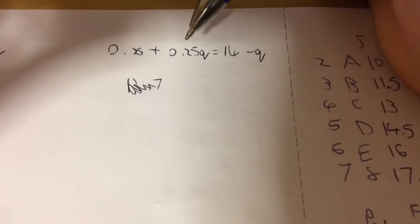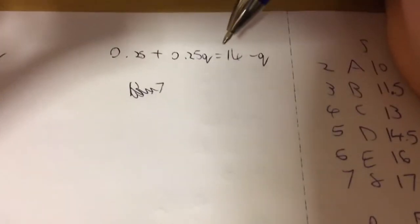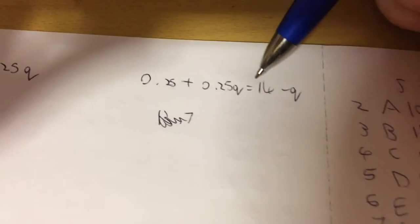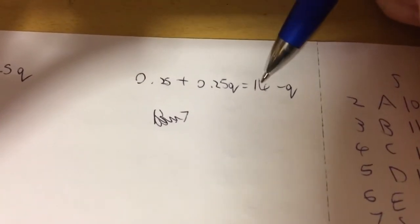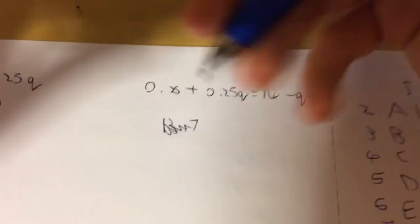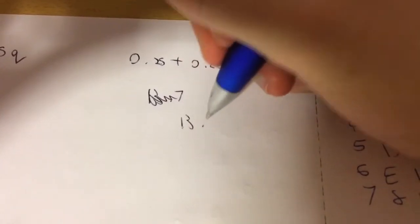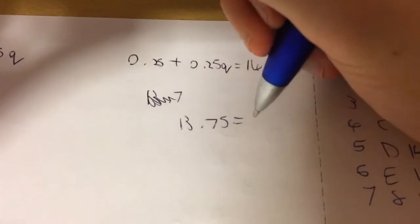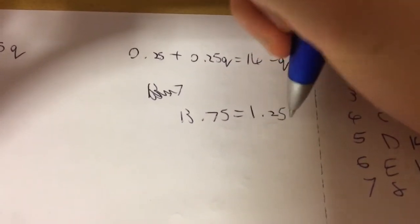We start off by making them equal each other, so 0.25 plus 0.25Q equals 14 minus Q. We add them over, so let's go to this side, and then let's go to this side, so that becomes 13.75 equals 1.25Q.